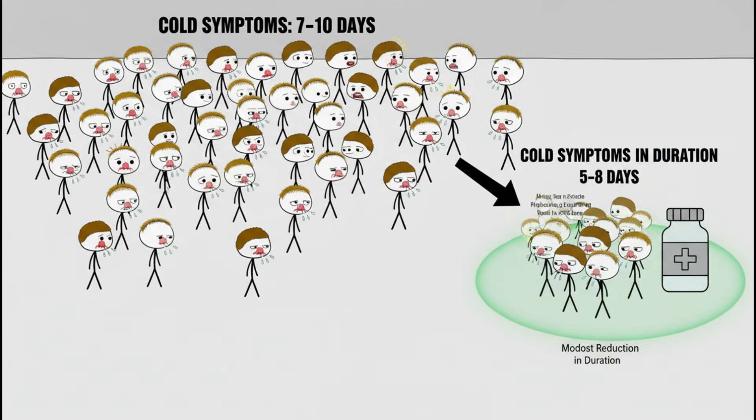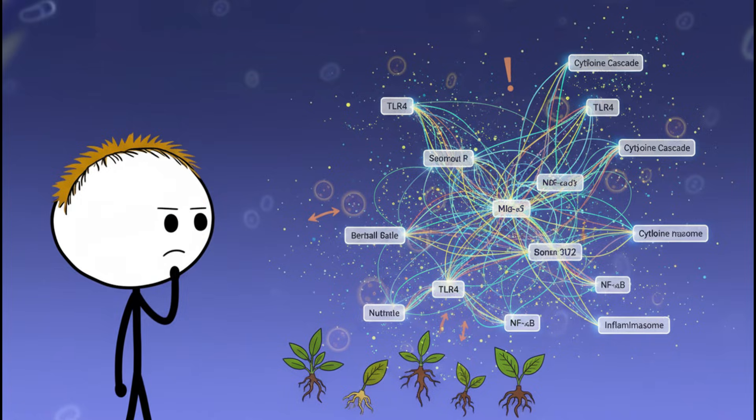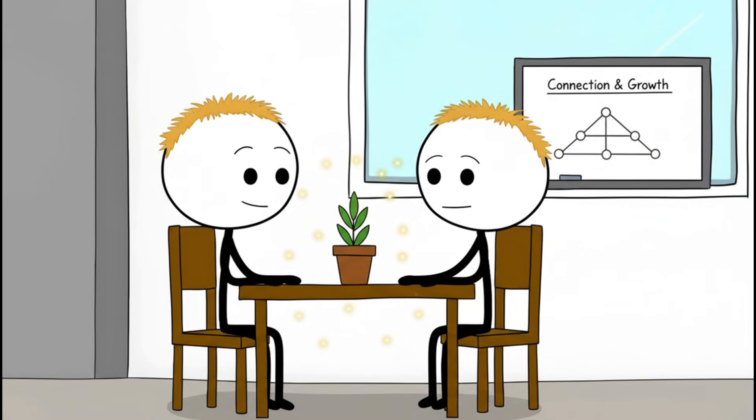Herbal products complicate this further. Echinacea, elderberry, and similar herbs can activate immune signaling. In some cases, that's helpful. In others, it can worsen autoimmune symptoms or inflammatory responses. That's not speculation, that's immunology.